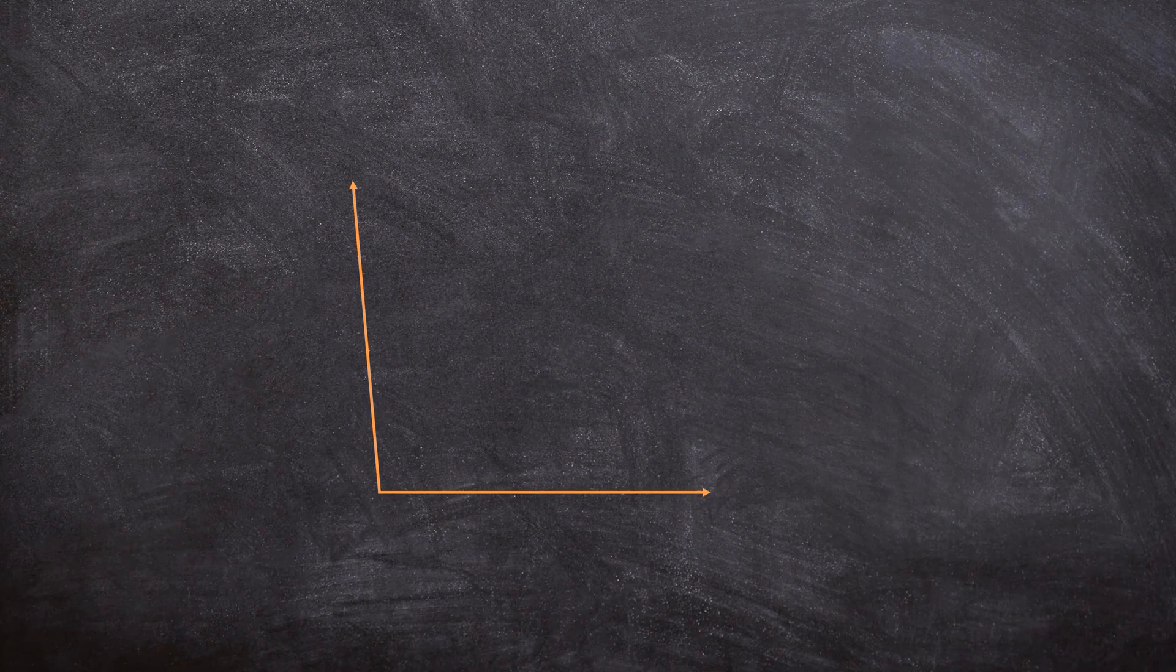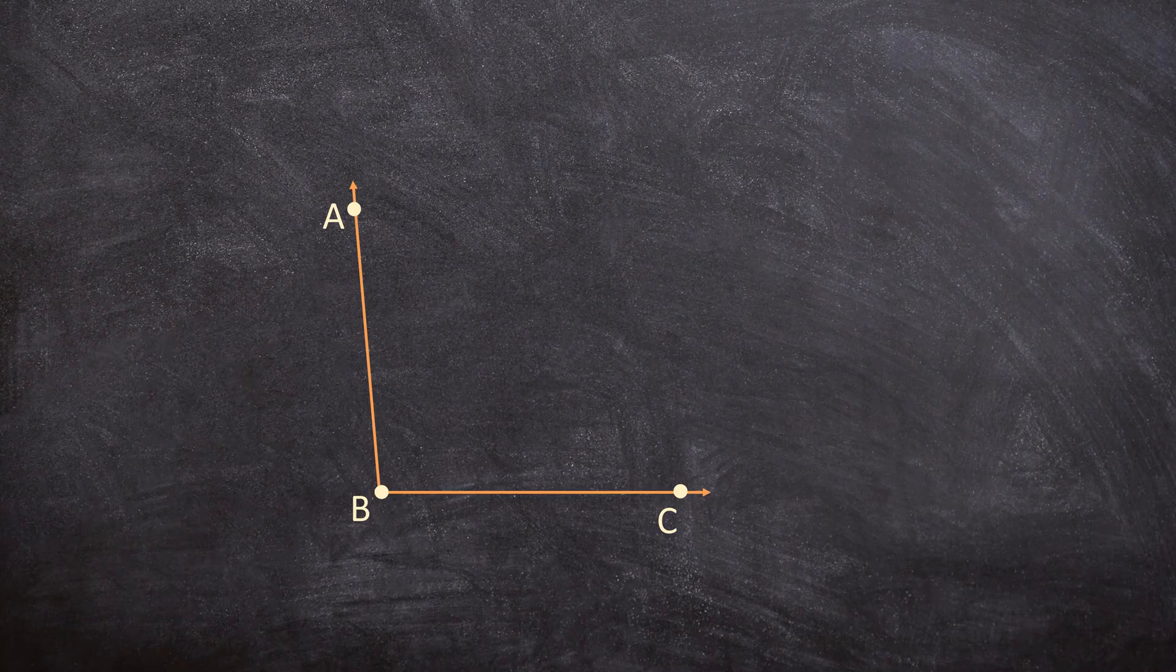Here we have two rays and they share a common point. We have ray AB and we have ray BC and we want to name this angle.